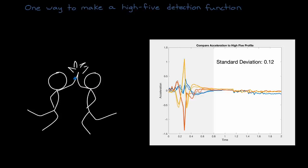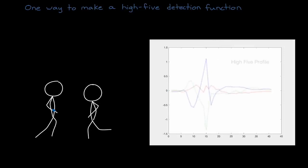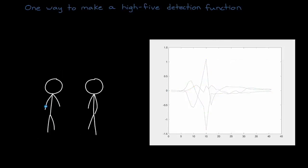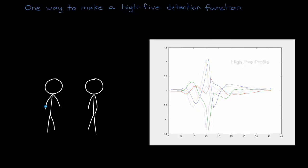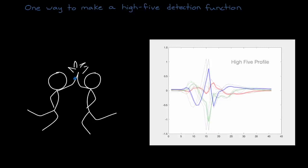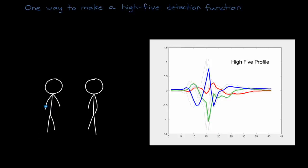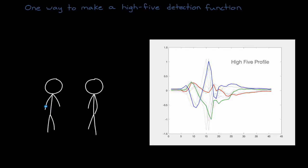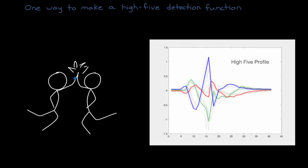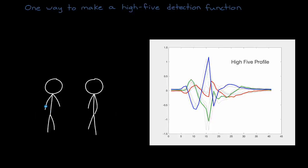However, we can make this problem more difficult by realizing that every high five is not the same, but that the acceleration pattern varies from instance to instance. Some people might move their hand faster or slower, or pause right before the big slap, or just high five in a strange way. Now, if we want to use our standard deviation approach, we have to do that for each profile in the set. And if the deviation between any of these profiles and the sensed acceleration drops below some threshold, we claim a high five took place. But that wouldn't cover the cases for the high fives that fall outside of these ranges, and that we didn't collect data for.